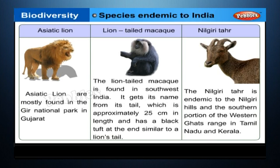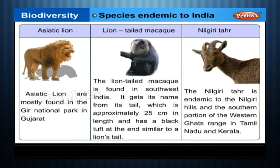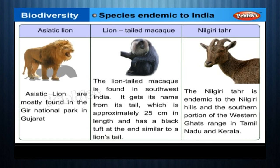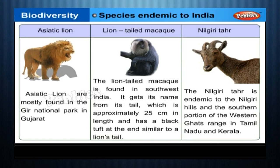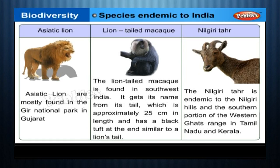Species endemic to India include the Asiatic Lion, mostly found in the Gir National Park in Gujarat; the Lion-Tailed Macaque, found in southwest India, which gets its name from its tail approximately 25 cm in length with a black tuft at the end, similar to a lion's tail; and the Nilgiri Tahr, endemic to the Nilgiri hills and the southern portion of the Western Ghats range in Tamil Nadu and Kerala.